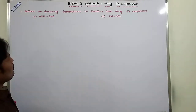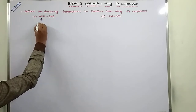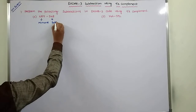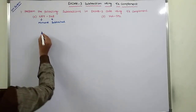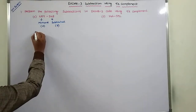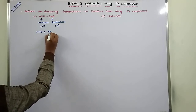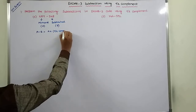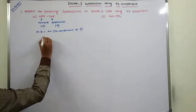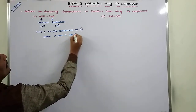The first example is 687 minus 348. Here, 687 is called the minuend and 348 is called the subtrahend. The minuend can be taken as A and the subtrahend can be taken as B. We have to perform A minus B, where A minus B is equal to A plus the 9's complement of B, and A and B are represented in XS3 code.